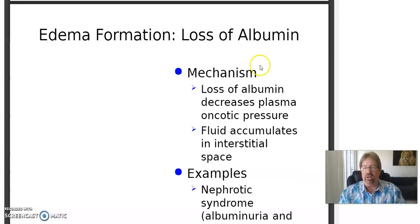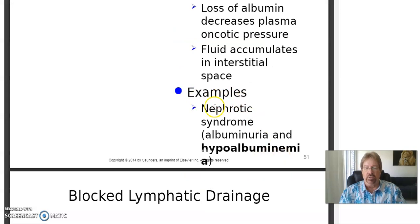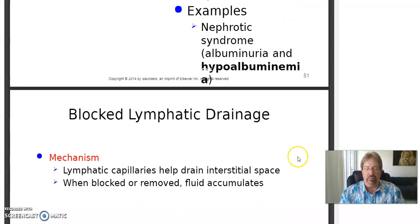Edema formation from loss of albumin: albumin is the common plasma protein. Its loss decreases oncotic pressure by not having enough dissolved substances, and fluid accumulates in interstitial spaces. Examples include nephrotic syndrome, albuminuria — losing albumin in the urine due to kidney problems — and hypoalbuminemia, not enough albumin in the blood.